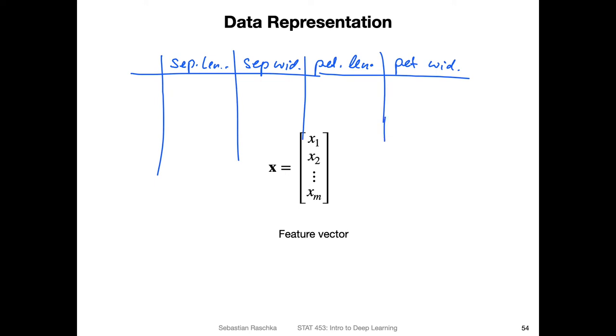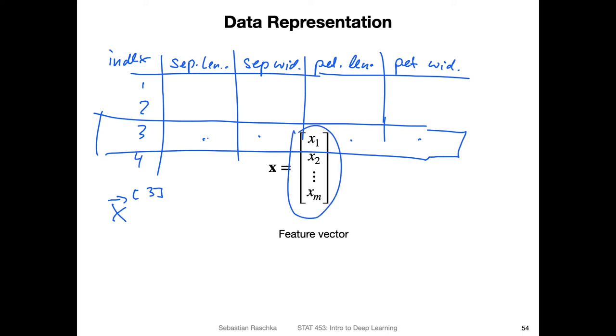So if you think back of the iris example where we had sepal length, sepal width, petal length, and petal width, so we had four features. And then if I look at the training index, let's say focus in on the third training example, I would write it down as three and then it's a vector. So it's the third feature vector. So in this case, we have a vector consisting of four values. So this is what I'm showing you here as a vector representation.